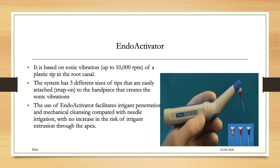The endo activator is based on sonic vibration up to 10,000 rpm of a plastic tip in the root canal. The system has three different sizes of tips that easily attach to the handpiece and create sonic vibration. Use of the endo activator facilitates irrigation penetration and mechanical cleansing compared with needle irrigation, with no increased risk of irrigation extrusion through the apex.